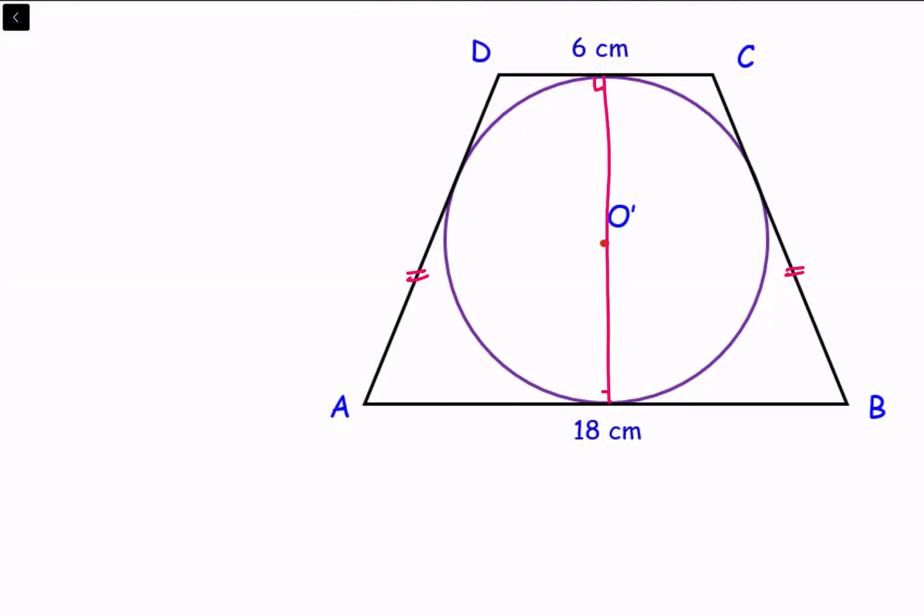Now because this is an isosceles trapezium, by symmetry the left side and right side figures are mirror images of each other. That means this side 6 centimeter will get bisected here. So this will become 3 centimeter and 3 centimeter. Same way down below this will get bisected. So this is 9 centimeter and 9 centimeter.